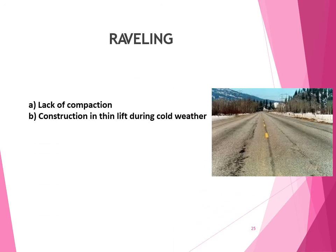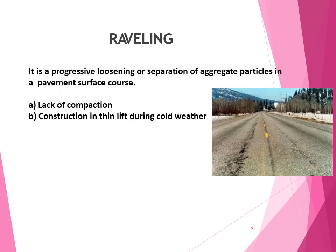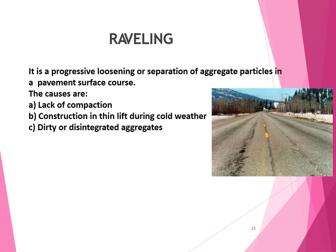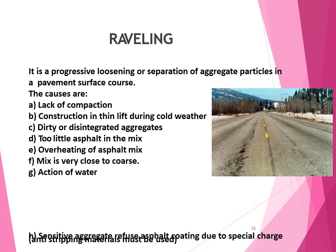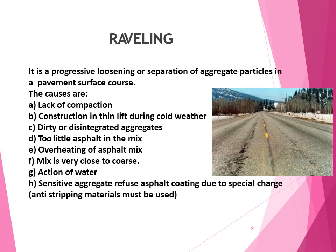Raveling — causes include lack of compaction, construction in thin lifts during cold weather, dirty or disintegrated aggregates, too little asphalt in the mix, overheating of asphalt mix, mix that is too coarse, action of water, and moisture-sensitive aggregates refusing asphalt coating due to surface charges. Anti-stripping material must be used to address this issue.